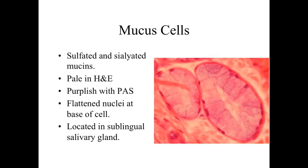The final type are mucus secreting cells. We have a lumen — a space inside the secretory region — with the epithelial lining and a very distinct basement membrane with connective tissue underlying it. These mucus secreting cells release sulfated and sialylated mucins. They're pale in hematoxylin and eosin, purplish in the PAS stain, with lots of secretory product in their cytoplasm, and their nuclei tend to be flattened towards the base of the cell — similar to goblet cells but packed in with other mucus secreting cells. Find these in a variety of locations, but a good starting point is the sublingual salivary gland.